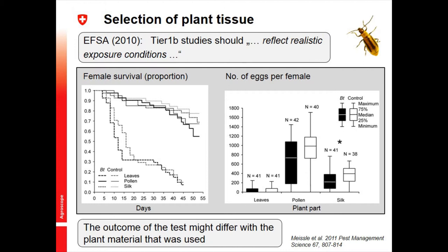Looking at fecundity — the number of eggs females produced after eating different plant materials — there was a huge difference between females that fed on pollen versus silk versus leaves. More importantly, we saw a significant difference for the silk but not for the other two. If that had been a test for unintended effects, feeding leaves gives a fine result, feeding pollen gives a fine result, but feeding silk gives a problem. The outcome of your test may differ entirely depending on which plant material you use.